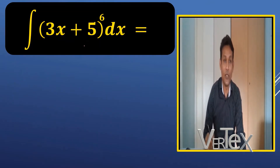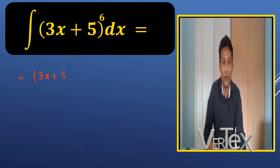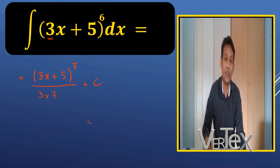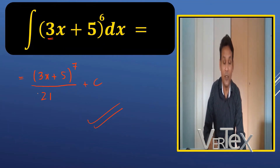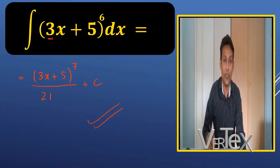Now let's do the integration of our opening question. The integration of (3x plus 5) to the power 6 gives (3x plus 5) to the power 7, divided by 3 into 7, plus c. When you simplify, 3 times 7 is 21, and that's it. Some teachers also differentiate the bracket and write it in the denominator, but we don't need to do that — it's very simple.